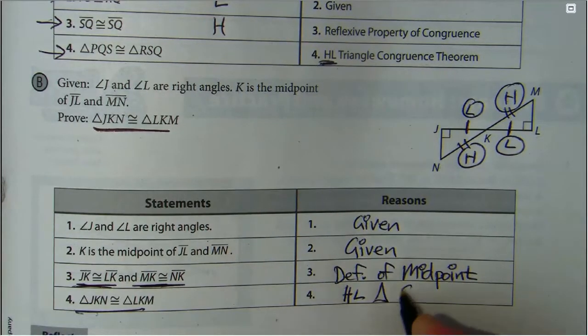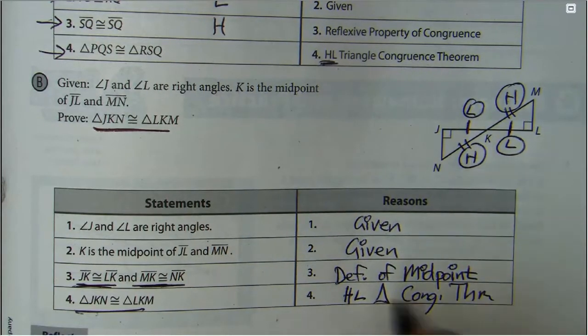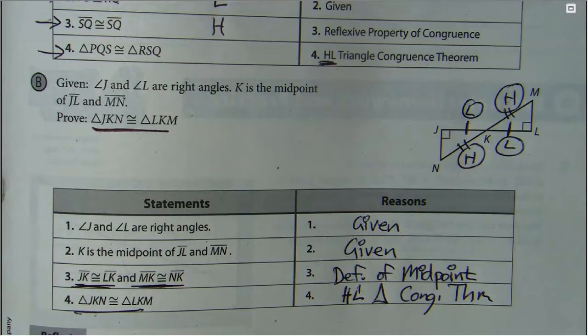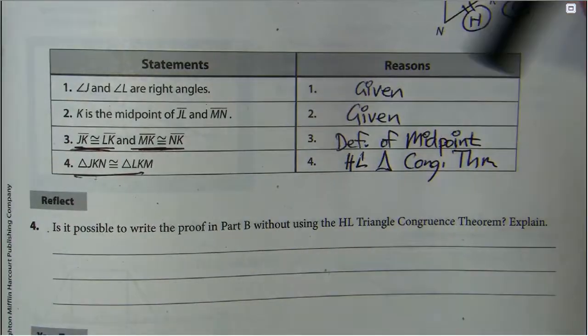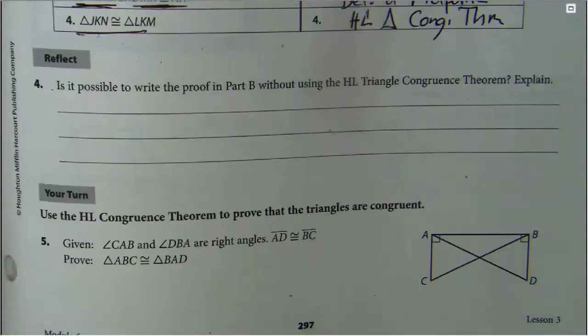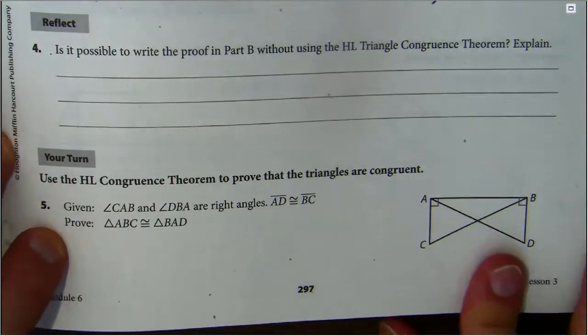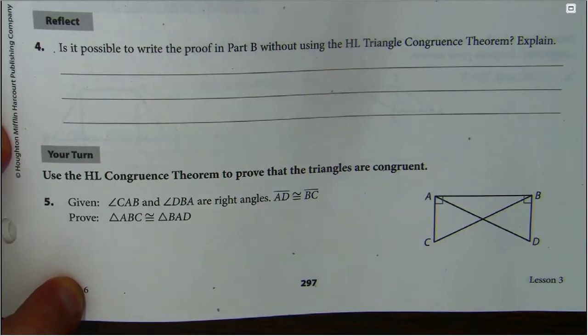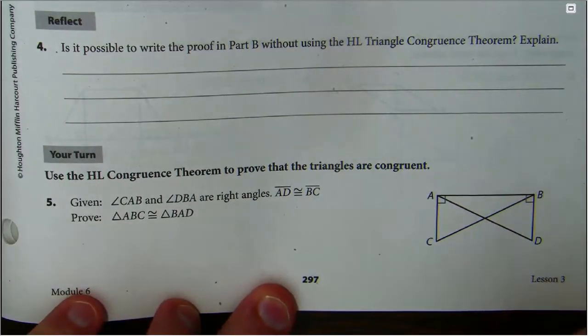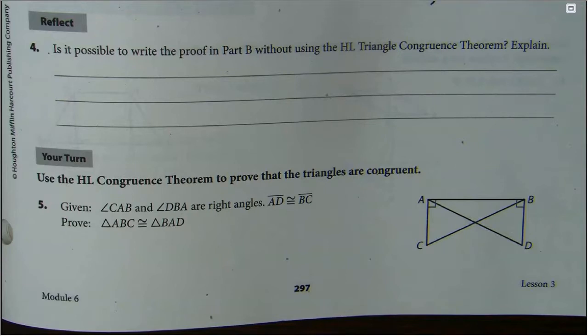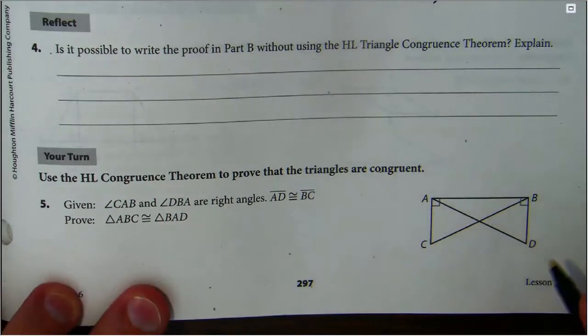Good job, kiddos. So HL triangle congruency done. One more proof and we are done. Question: Do you guys want me to write this all out or just bag and tag it? All right, let's write it all out. So we'll start with the markings. Where do I start?